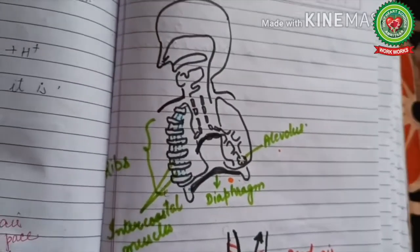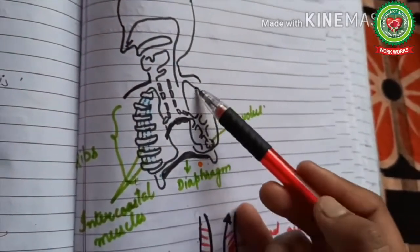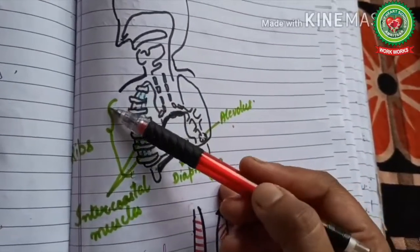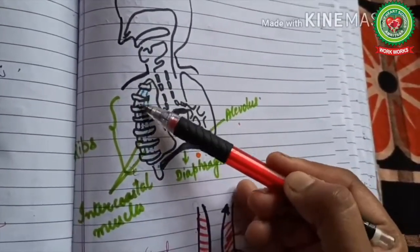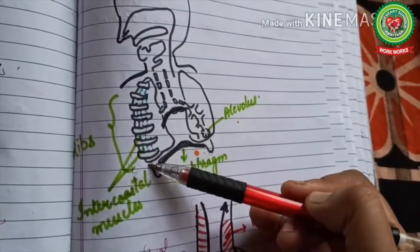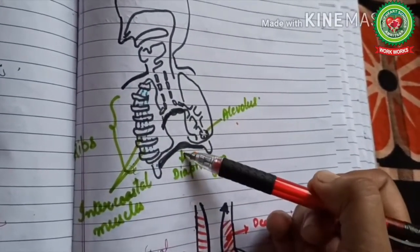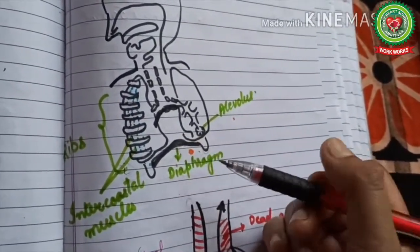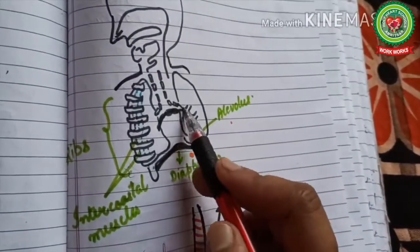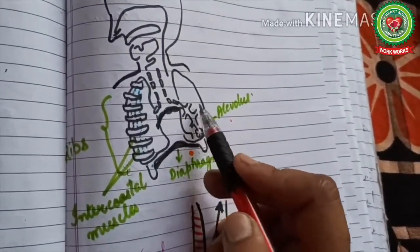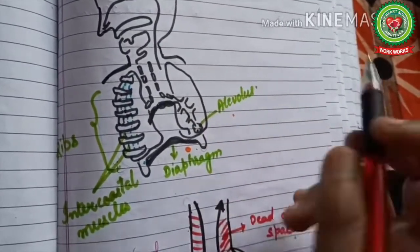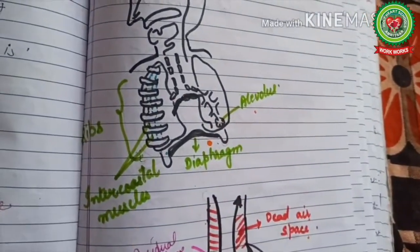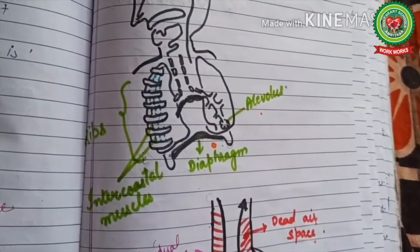Look at this diagram showing the thoracic region — the chest cavity. Here are the ribs, the blue colored intercostal muscles which help in contraction and relaxation, and the diaphragm which becomes flattened during inspiration and dome-shaped during expiration. Inside the lung are bronchi — primary, secondary, tertiary as discussed earlier — and at the last is the alveolus. Now we will discuss the pulmonary air volumes.